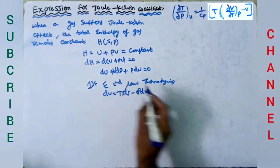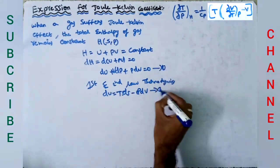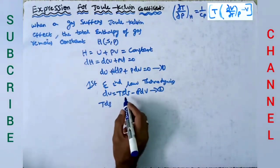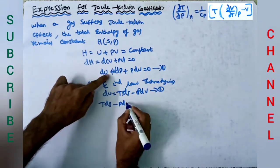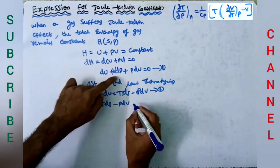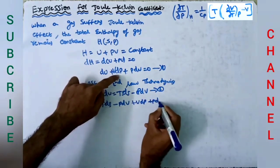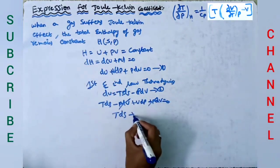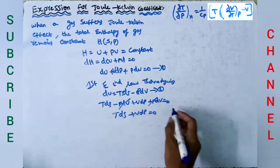In the place of du we substitute this equation. Substituting TdS minus PdV and writing the remaining VdP plus PdV equals zero, the PdV terms cancel and we get TdS plus VdP equals zero. This is equation number 3.